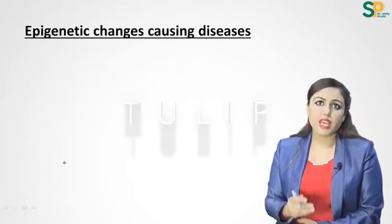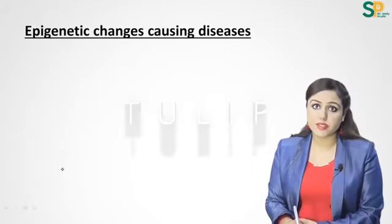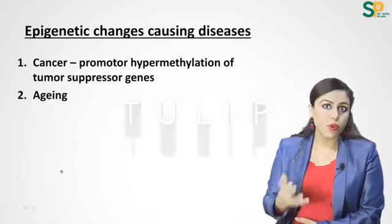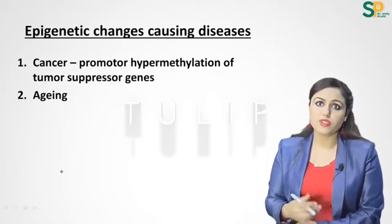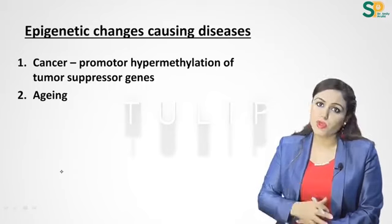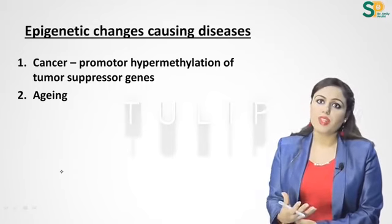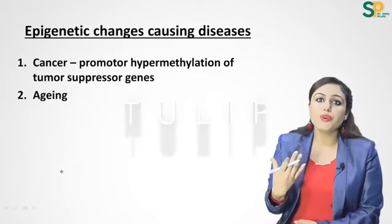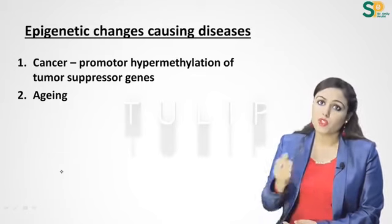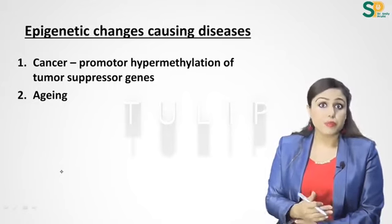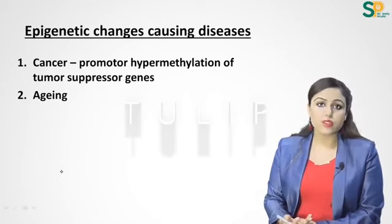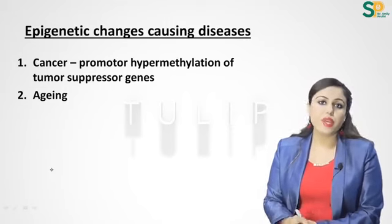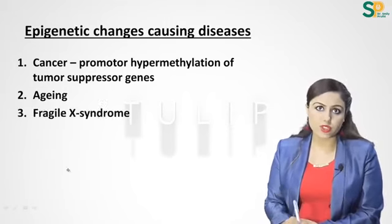A less common modification is histone methylation, with enzyme histone methyltransferases. Epigenetic changes can sometimes cause diseases. For example, in some cancers, promoter hypermethylation of tumor suppressor genes occurs — the promoter is hypermethylated and inactivated, so tumor suppressor proteins are not synthesized, increasing the chances of malignancy.